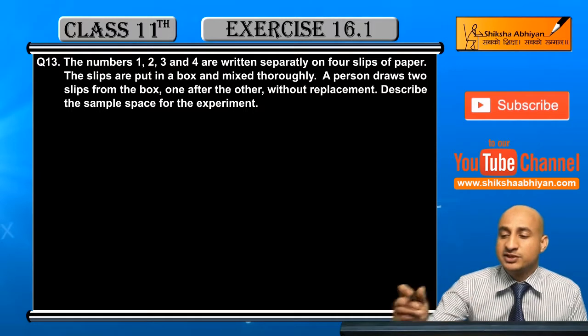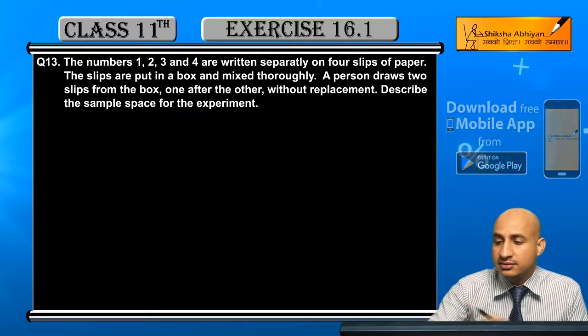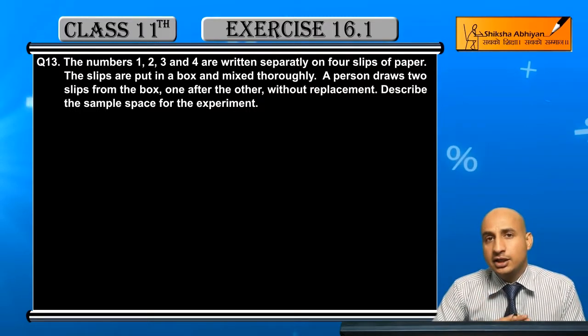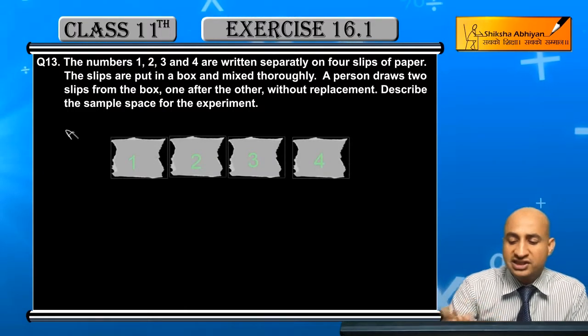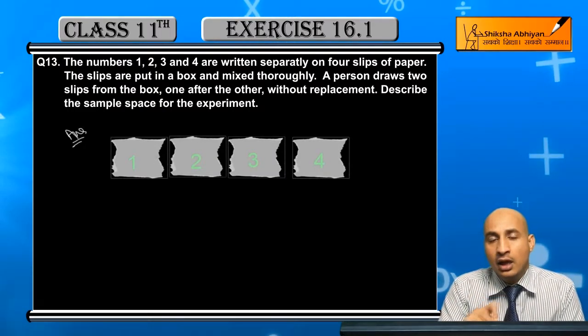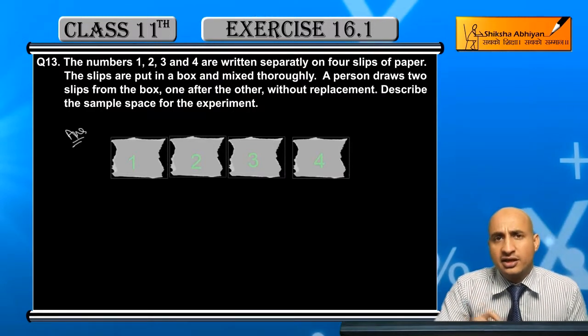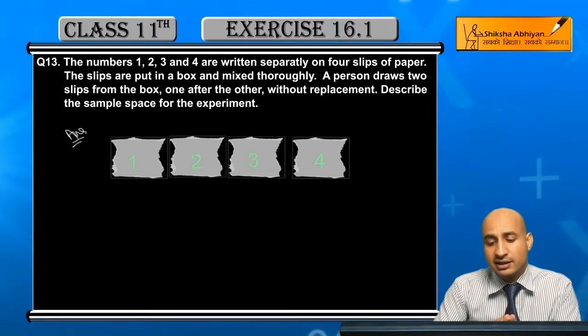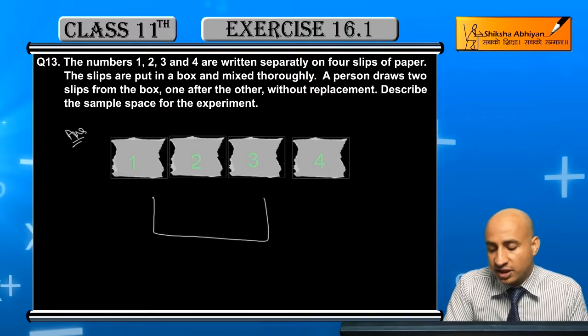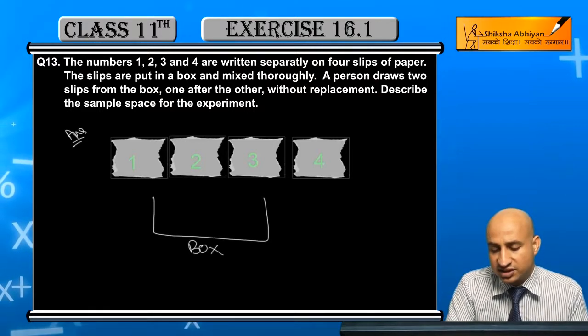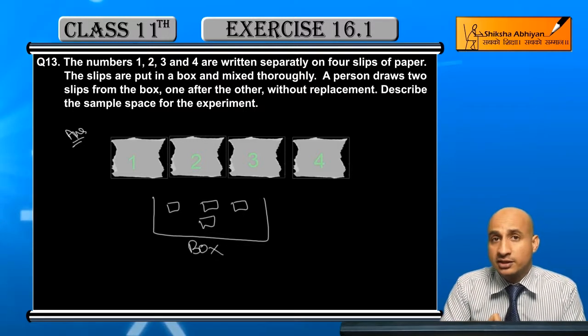Now you can see what I have here. I have four slips: 1, 2, 3, 4. Now what do I have here? I have the slips. This is a box. I have to put the numbers in the box.